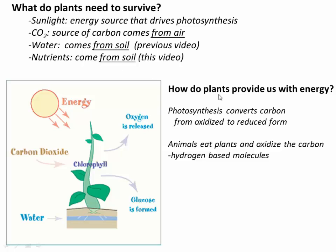Plants provide us with energy we can eat, but they also make hydrocarbons — almost all of our energy comes from plants. The way they make that energy is by using photosynthesis to convert carbon from its oxidized form CO2 into its reduced form, which usually involves a carbon-hydrogen bond. Animals come along and eat these plants, oxidize that carbon, and get energy from it. This includes both humans eating plants and bacteria and microorganisms eating plant materials and breaking down a lot of plant material in soils.